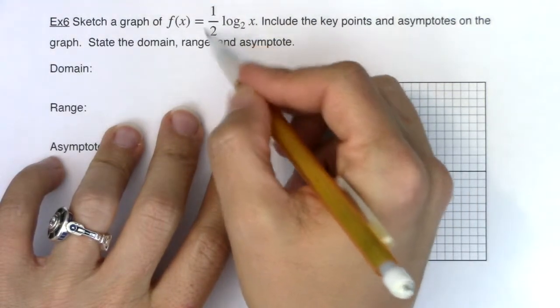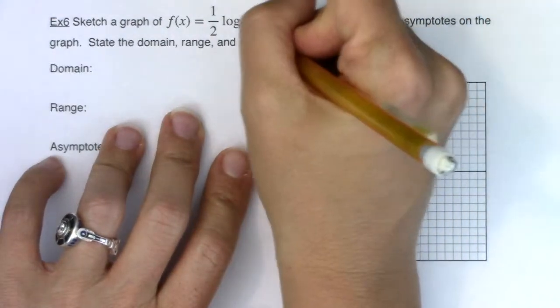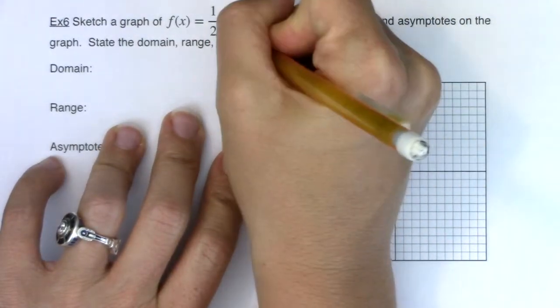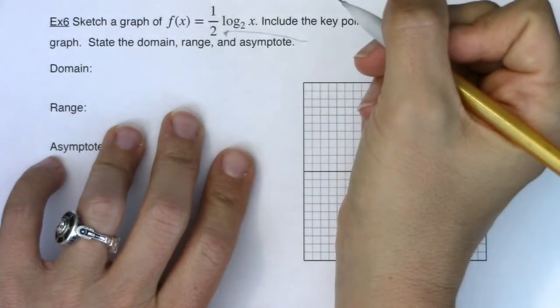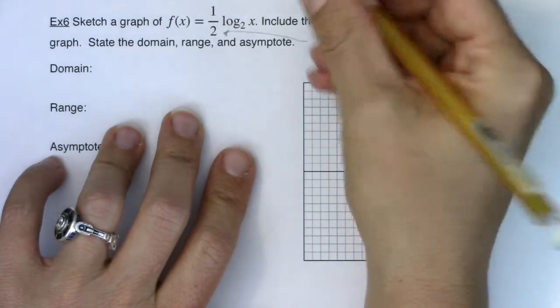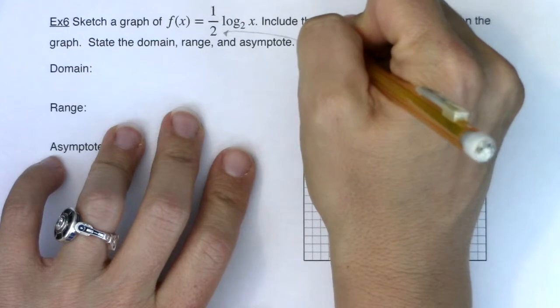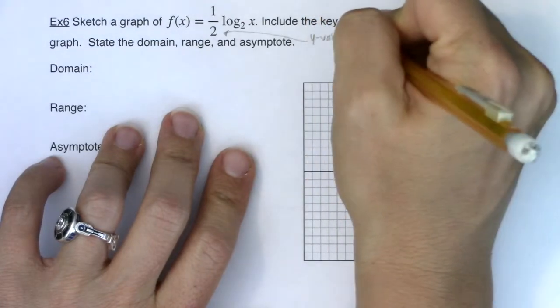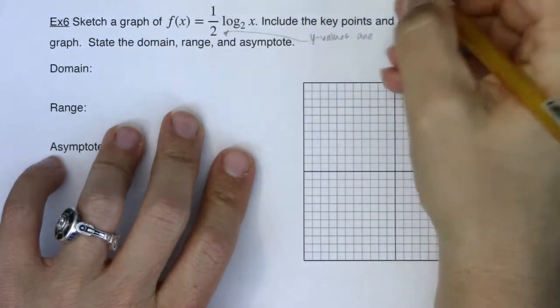But I have this 1 half out here in front of it. So what that's doing is this 1 half is shrinking the y values from example 3 by a factor of 1 half. So y values are half those from example 3.